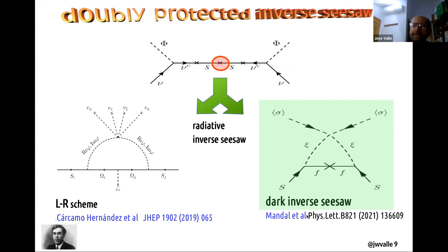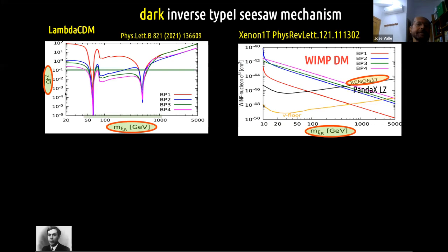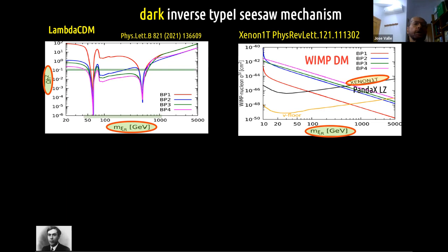Instead, I will convince you that indeed this construction provides a decent theory of WIMP dark matter. I plot here the relic dark matter density versus the dark matter mass for the case where dark matter is a singlet scalar boson. And you see for different benchmark choices indicated in color that they intersect the band that comes from the Planck determination at various values of the dark matter mass. That's very reasonable for a weak interaction theory. Remember, WIMP dark matter here has nothing to do with SUSY whatsoever — WIMP dark matter here is just the mediator of the seed of neutrino mass generation.